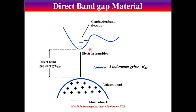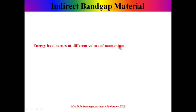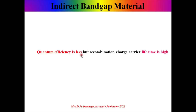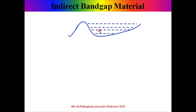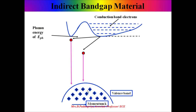The quantum efficiency in direct bandgap material is high and the recombination charge carrier lifetime is less. In indirect bandgap material, the energy level occurs at different values of momentum and the electron transition will not take place directly from the conduction band to the valence band. Examples of this type are silicon and germanium. The quantum efficiency in this case will be less and the recombination charge carrier lifetime will be high. Looking at the diagram, this is the conduction band and this is the valence band. The momentum vector is not the same as in the case of direct bandgap material.